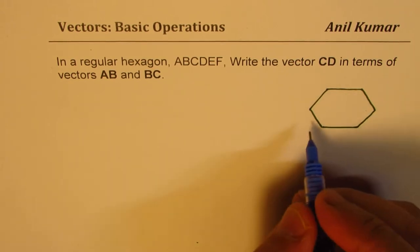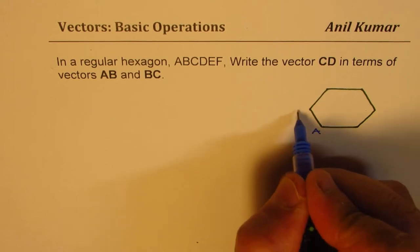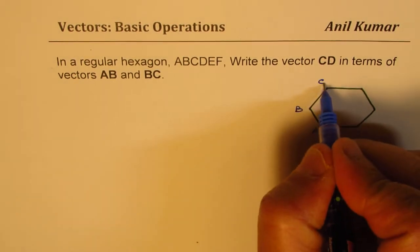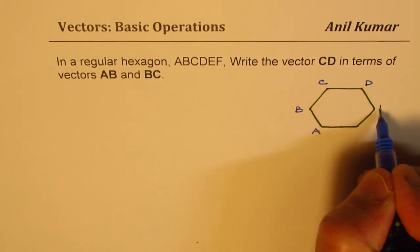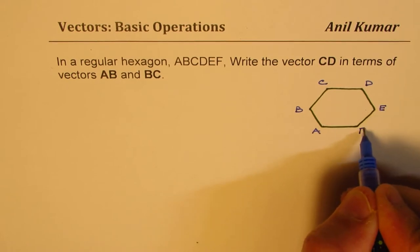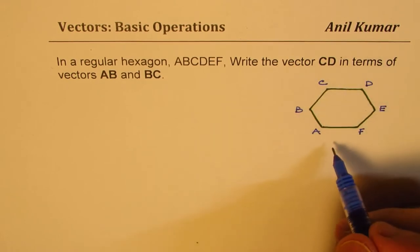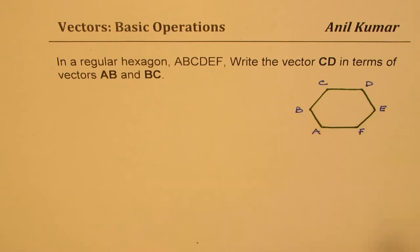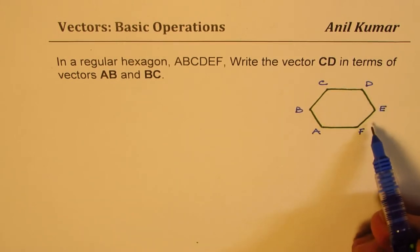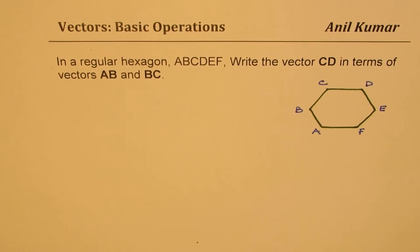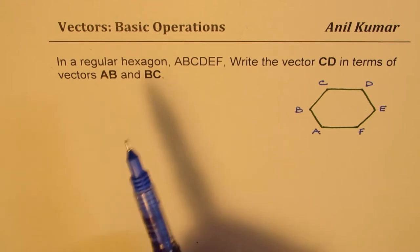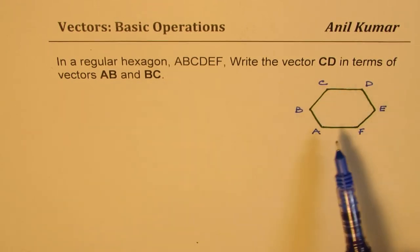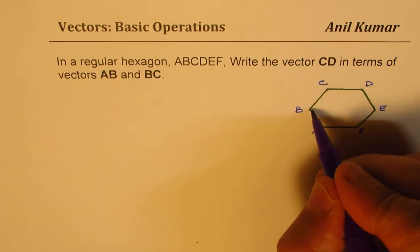We can say A, B, C, D, E, and F. A regular hexagon means all sides are equal, all angles are equal, so opposite sides will be kind of parallel. So we have three sets of parallel opposite sides.